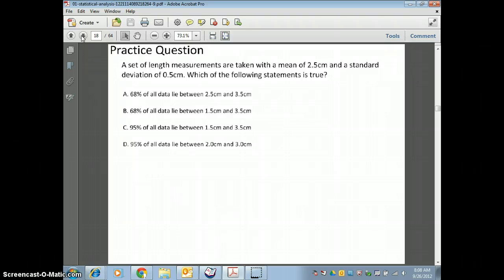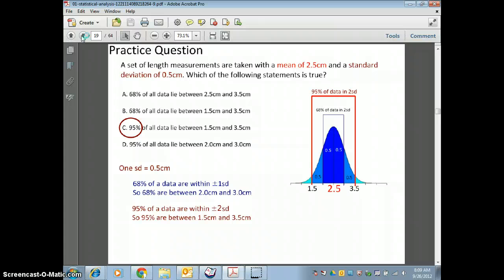Here's a good practice question. A set of length measurements are taken with a mean of 2.5 and a standard deviation of 0.5. Which of the following statements is true? 68% of all the data lie within 2.5 and 3.5. I'm not going to read them all. Do you have your answer picked? The correct answer is C. So if the standard deviation is 0.5, two standard deviations would be 1. So plus or minus 1 of 2.5 would give you 3.5, and minus 1 from 2.5 is 1.5. So that's two standard deviations, which gives us 95% of all the data points should lie within those two standard deviations.